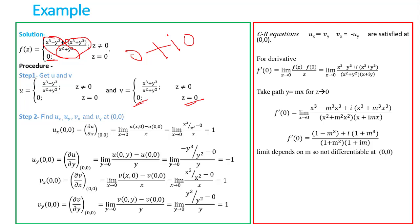Step 2: compute the partial derivatives. ux at (0,0) — using the definition, we calculate u(x, 0): putting y = 0 gives x³/x², so this is x. Then [u(x,0) − u(0,0)] / x = [x − 0] / x = 1. So ux(0,0) = 1. Now, uy at (0,0): limit as y tends to 0 of u(0, y) — putting x = 0 gives −y³/y².